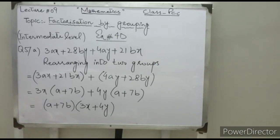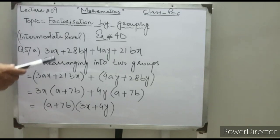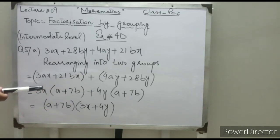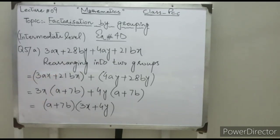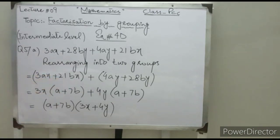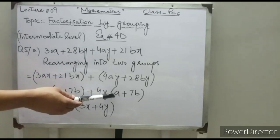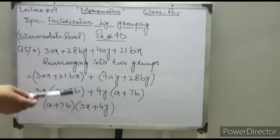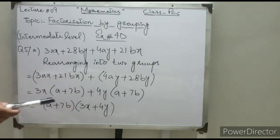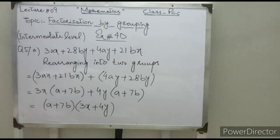In question 5 part A, we have four values. Rearrange them into two groups: the first group is 3ax and 21bx, because these two values have 3x common. The second group is 4ay plus 28by, which has 4y common. Now (a plus 7b) is the common factor — extract it, leaving 3x plus 4y. The final answer is (a plus 7b)(3x plus 4y).